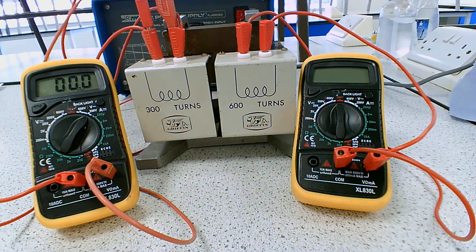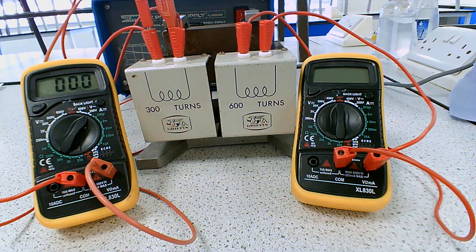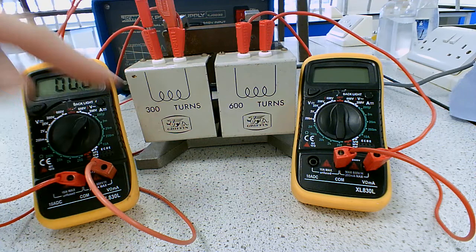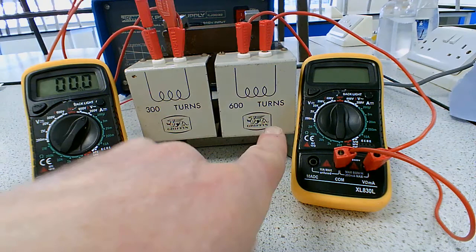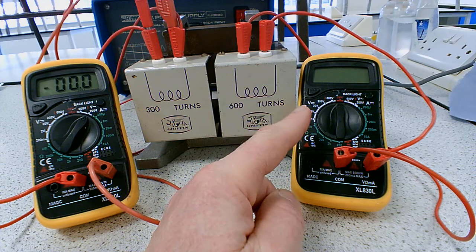Okay, so here we go again. This time we're going to be looking at calculating things using transformers. So here we've got our primary coil and you'll see it's got 300 turns on it and we've got a voltmeter here measuring the potential difference across that coil. We've got a secondary coil there with 600 turns on it and another voltmeter.